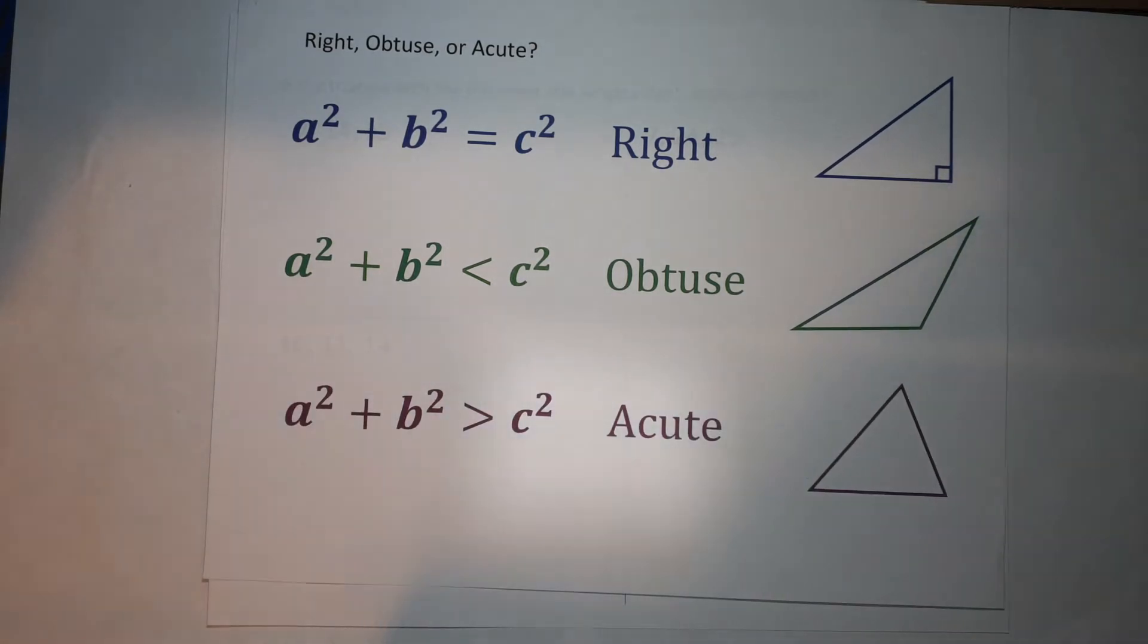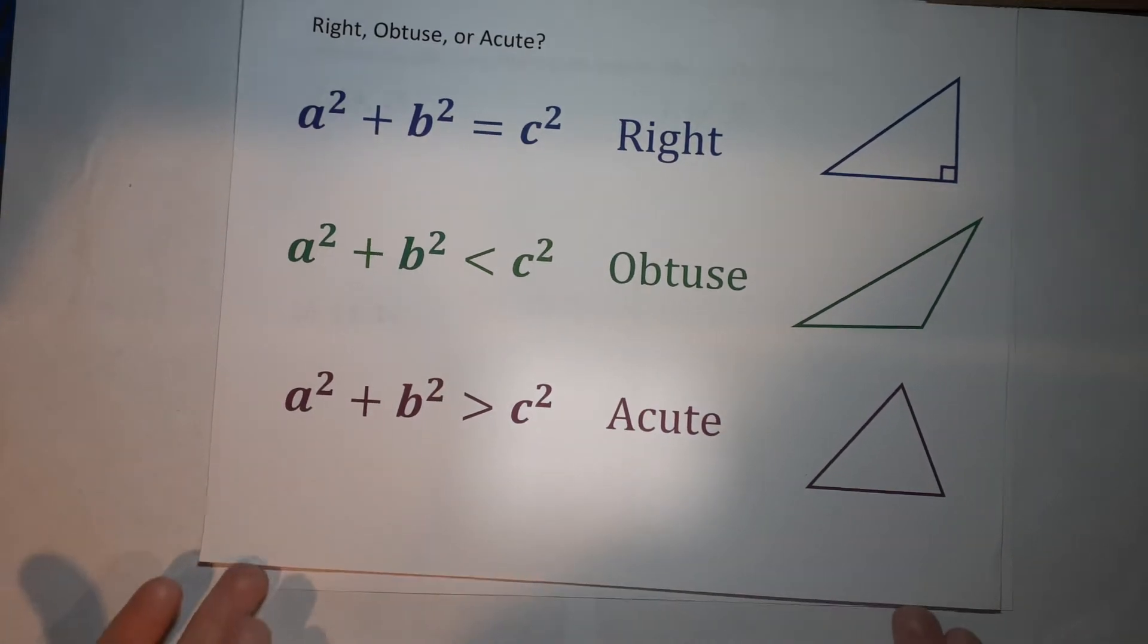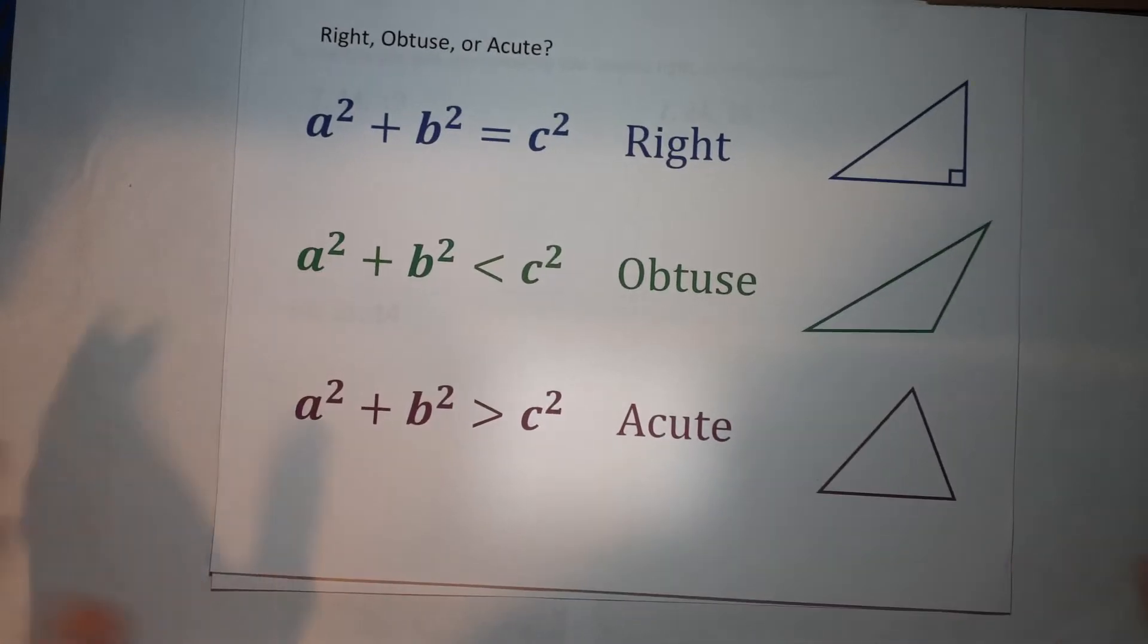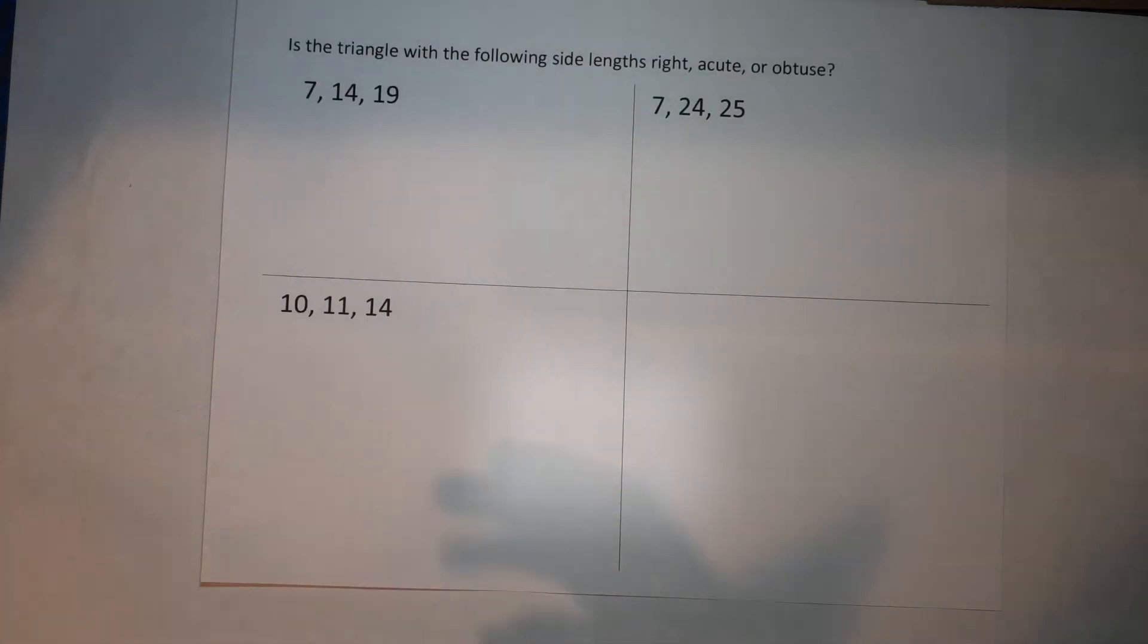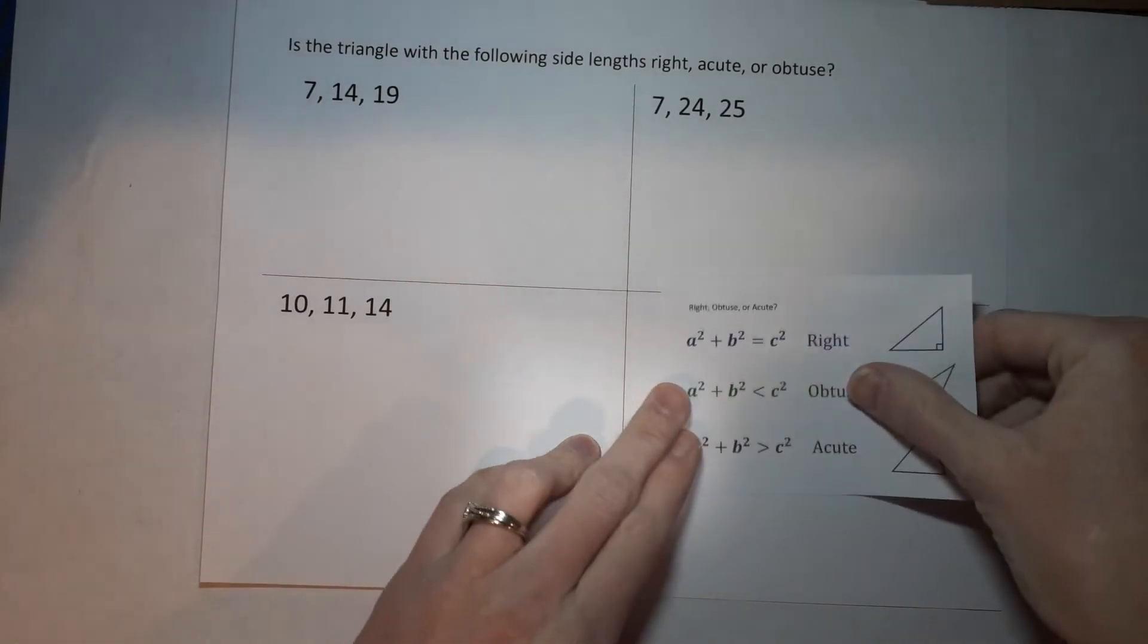Last one, you can probably guess. If the a squared plus b squared is larger, greater than, then it is an acute triangle, which means all the angles are less than 90 degrees. So guess what? We've got three problems. Can you guess that there's probably an example of each? Oh my gosh, wasn't that so nice of me. All right, so let's get started.